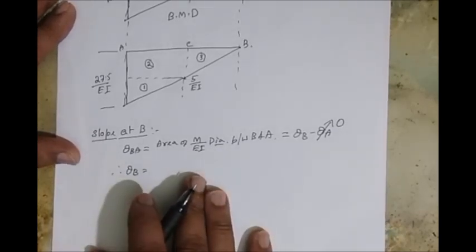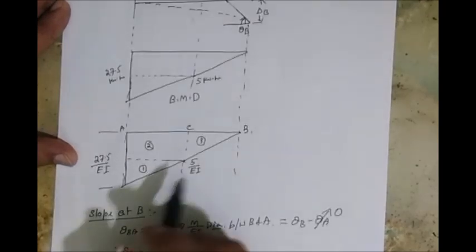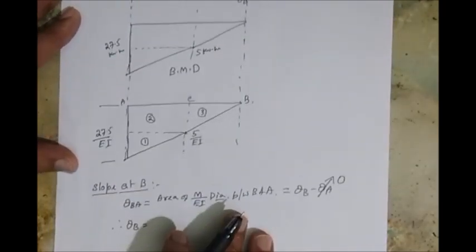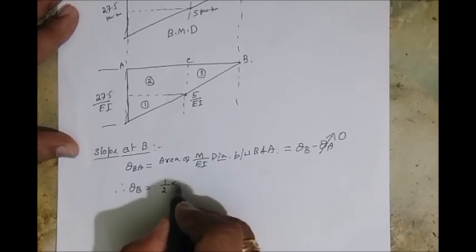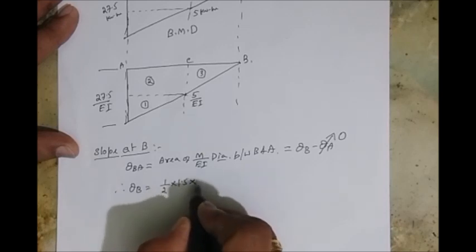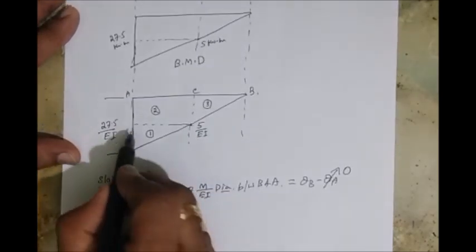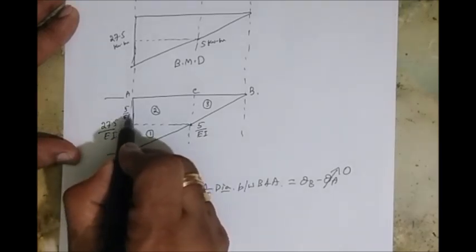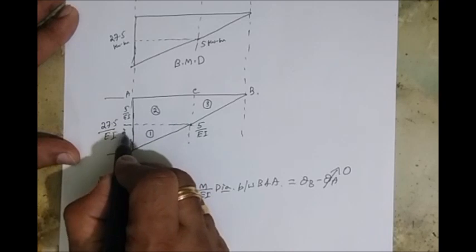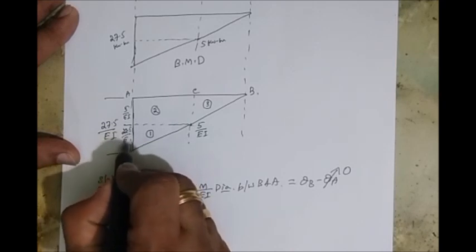So therefore theta B is equal to, we need to get the area of M over EI diagram between A to C. That means we need to consider all these three areas. So let's consider the first triangle part. What is the triangle part? Half into base 1.5, height. So what is the height here? This part, this is 5 by EI, so then this is 22.5 by EI.